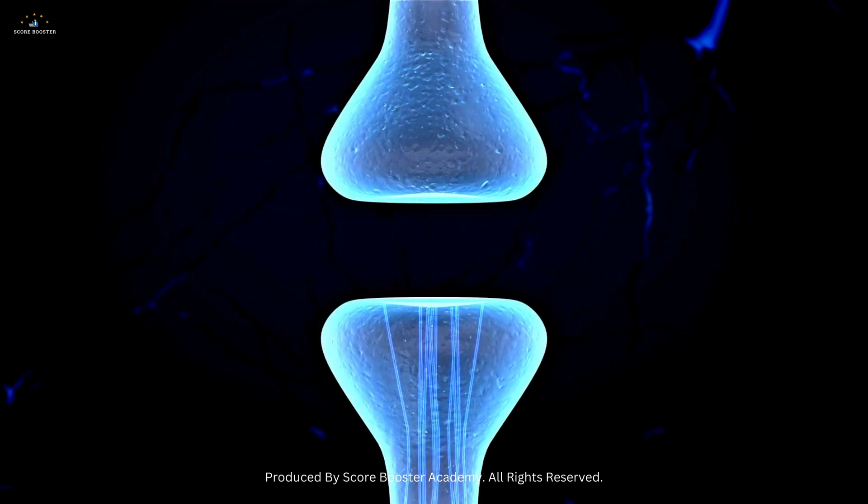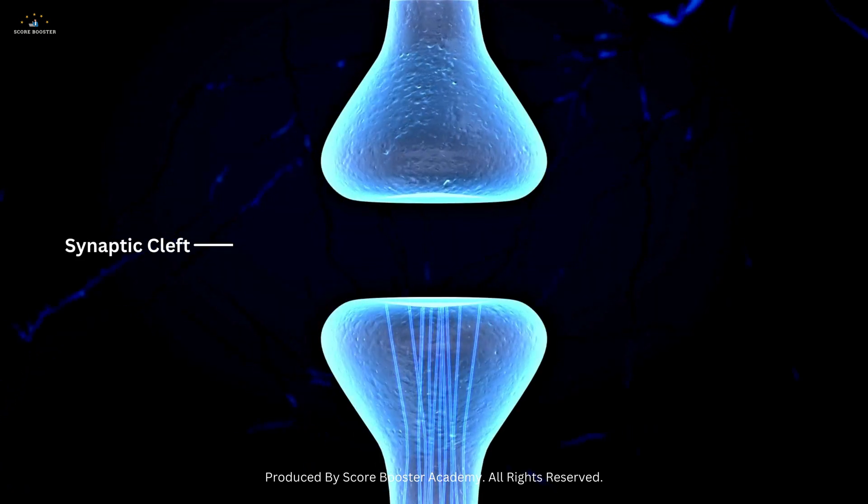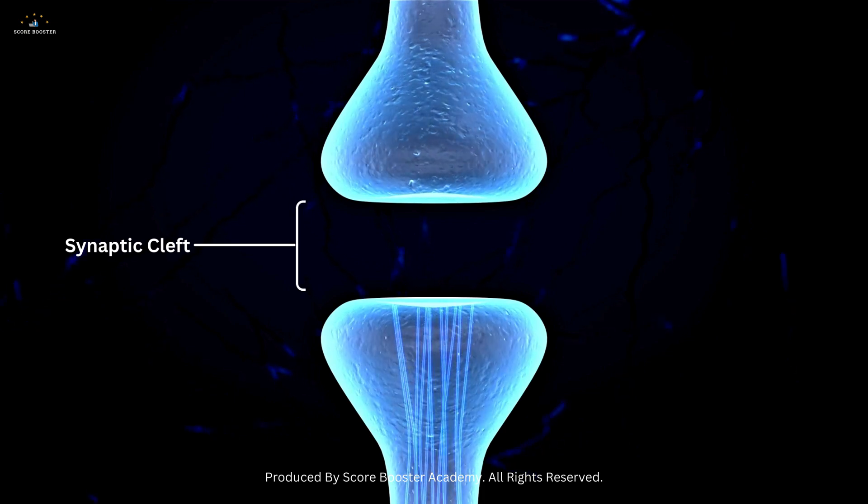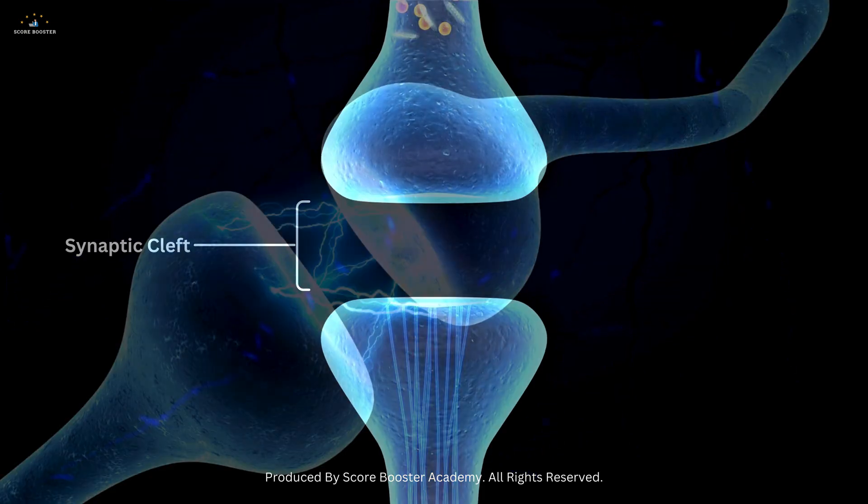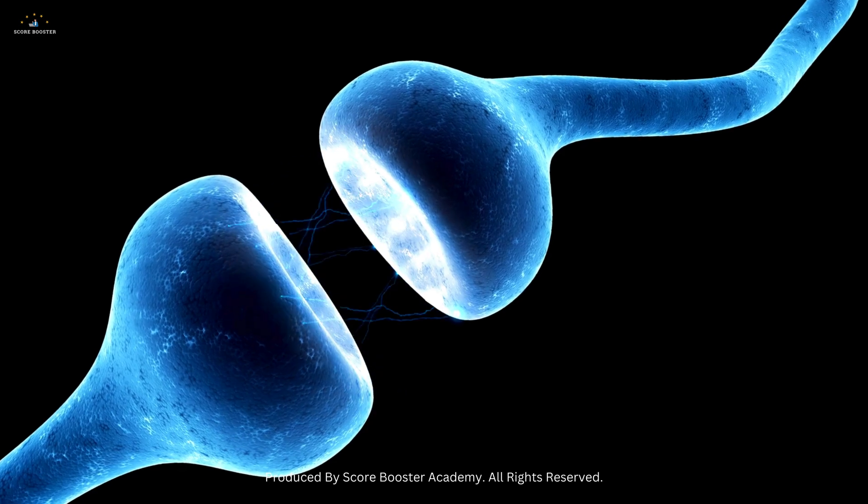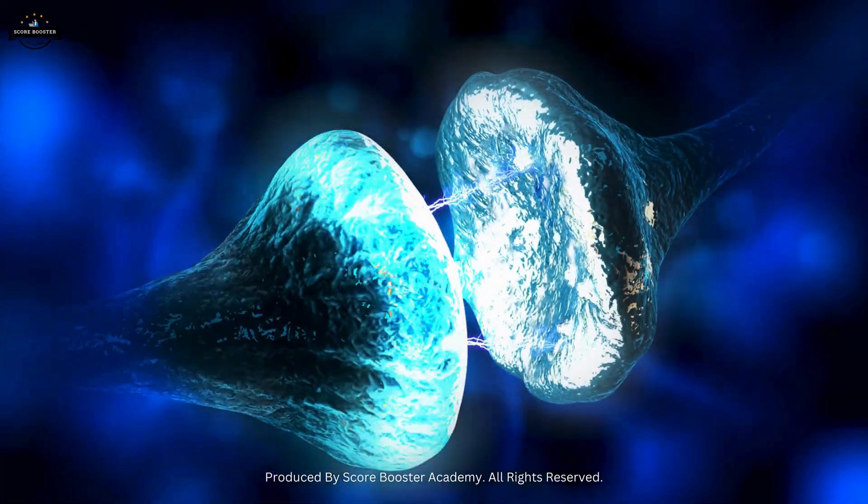At the heart of every synapse is the synaptic cleft, a microscopic gap that separates two neurons. This gap may seem insignificant, but it is a bustling hub of activity.